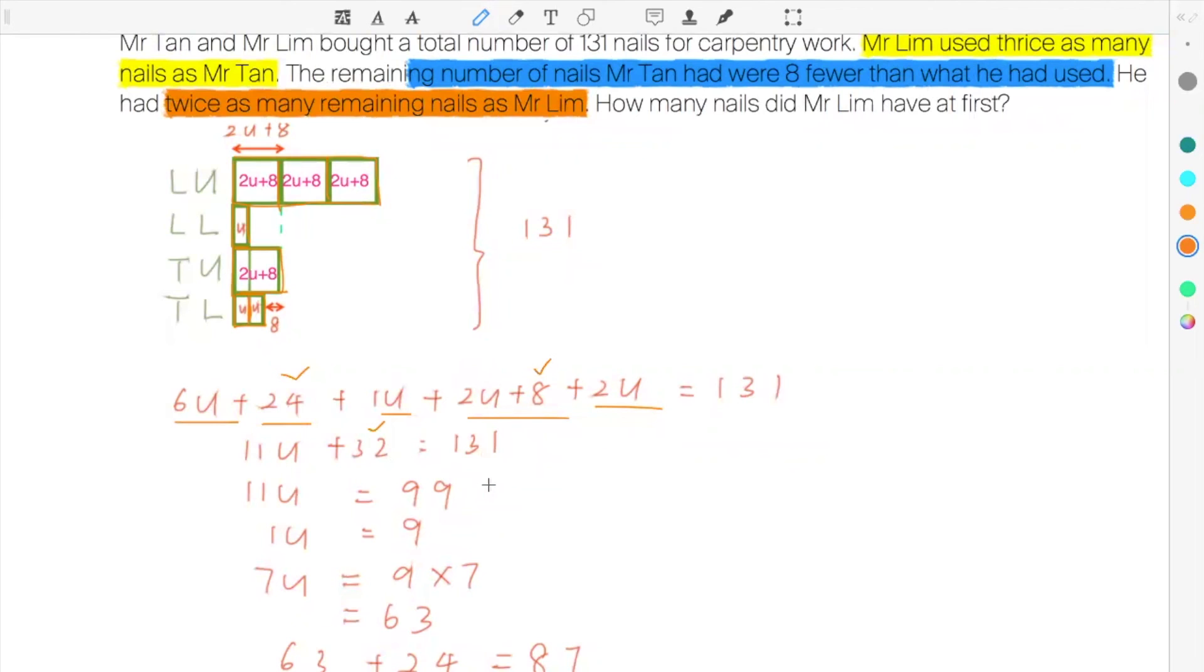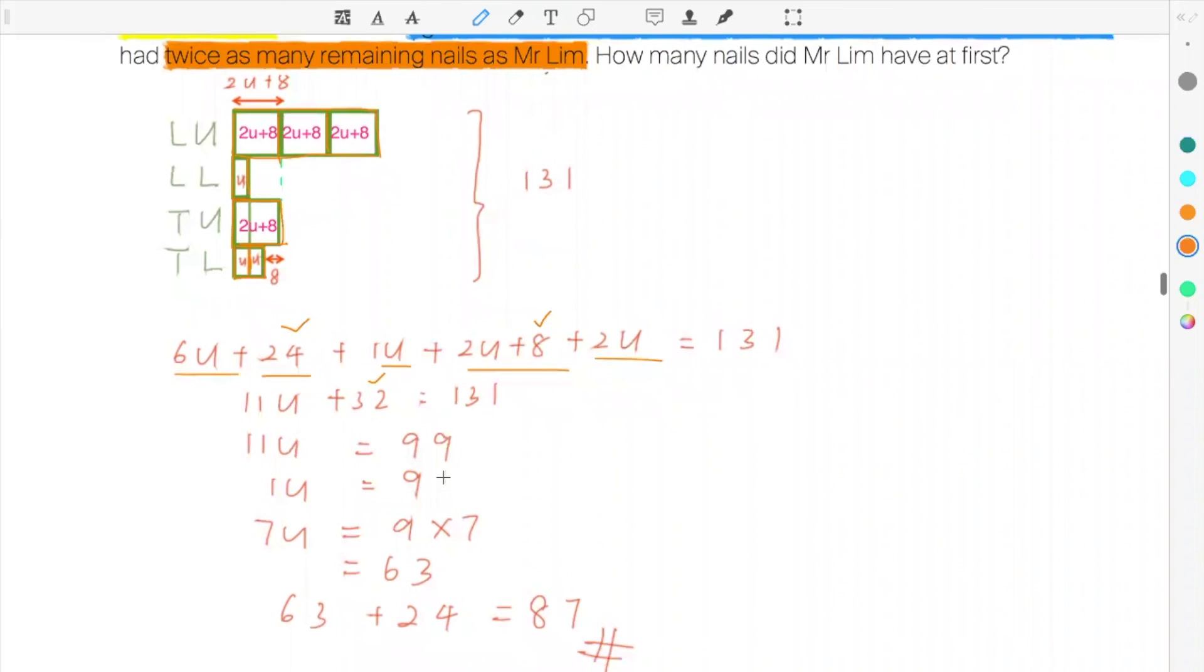131 minus thirty-two, you get ninety-nine. Eleven U is ninety-nine. One U is nine. So how many nails did Mr. Lim have at first? Lim at first. How many units do you see? Two, four, six, seven. Seven units is sixty-three.